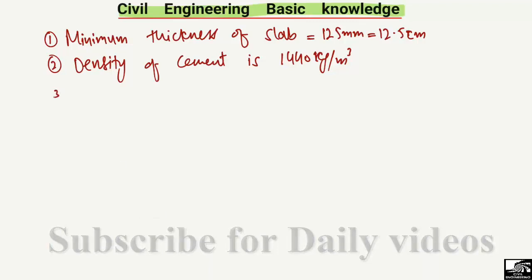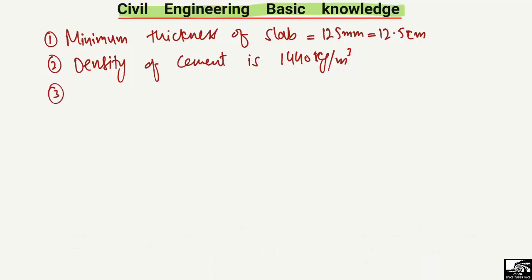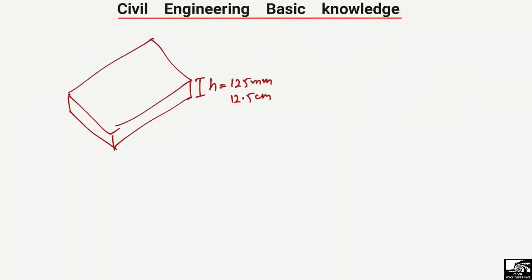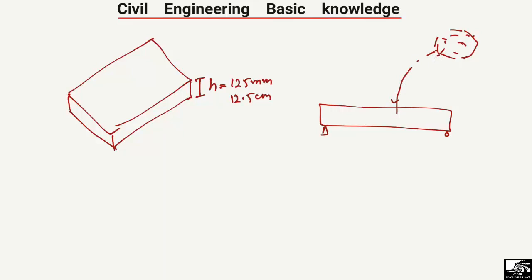The third important thing is that the maximum freefall of concrete is 1.5 meters. For example, consider this is my beam and I want to pour concrete into it — the concrete will come down into the beam like this.